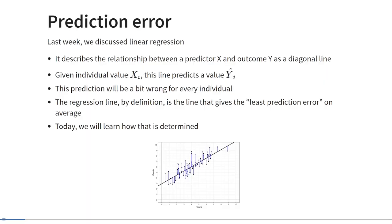Last week we discussed the concept of linear regression. It describes the relationship between a predictor x and an outcome y as a diagonal line. For each given individual value of the predictor x sub i, this line predicts a value y-hat sub i. But that prediction will be a little bit wrong for every individual. The regression line is the line that gives the least prediction error on average across the whole sample, and that also means the mean of the normally distributed error terms will be zero.